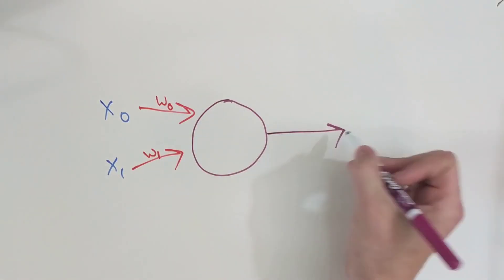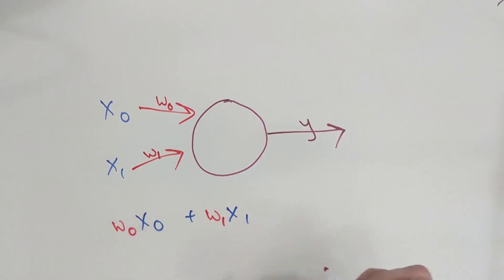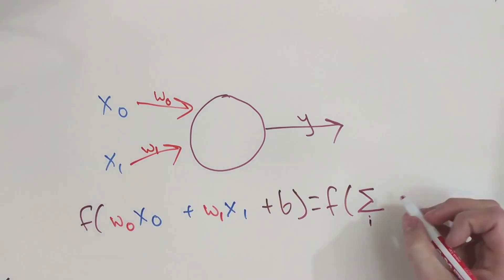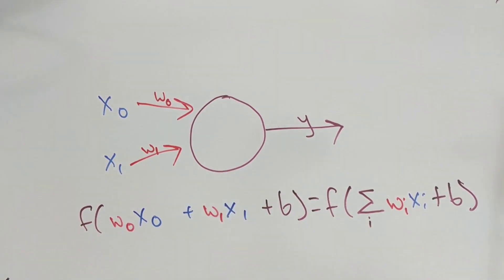For any specific neuron in a neural network, it takes in the weighted sum of all of its inputs and then it applies a function to that sum. The function applied to a neuron's input is called an activation function.